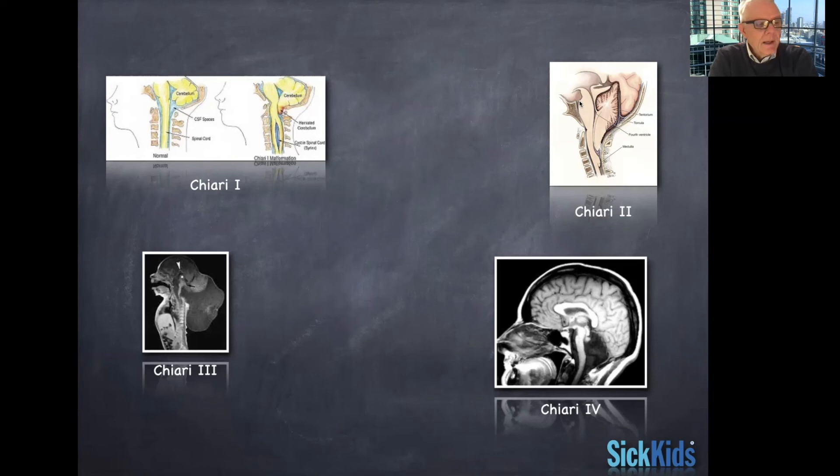And so for myself, I had a lot of experience when I first started my clinical practice, closing myelomeningoceles and then dealing with the Chiari 2 malformation that you see here. But more recently, it's pretty rare that I would close a neural tube defect and or see a Chiari 2 malformation.